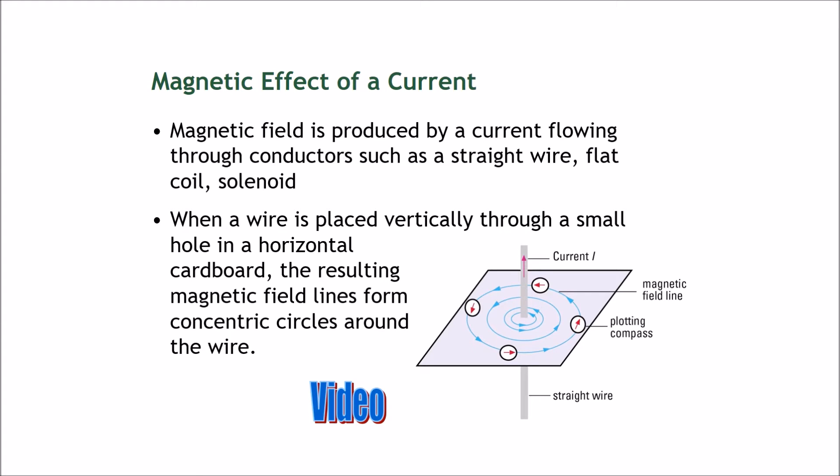Hello, so now we're going to talk about the magnetic effect of a current. A magnetic field is produced by a current that is flowing through conductors, such as a straight wire, a flat coil, or a solenoid.